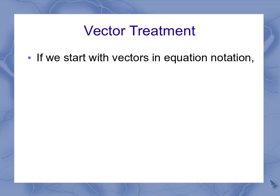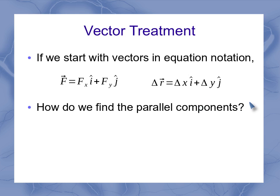So what if I start with my vectors in vector equation notation? Rather than giving the magnitude and direction, I've given the force in my x and y components with my i hat and j hat, and the same thing for my displacement. How am I going to find the parallel components of these two things without knowing what the angle is?